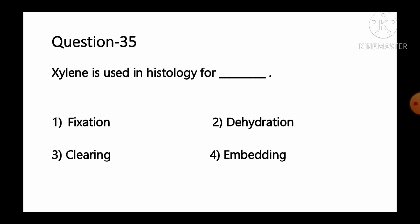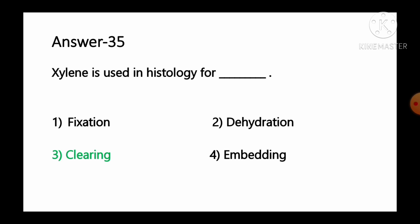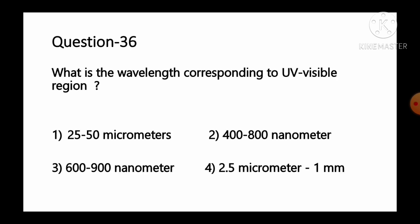Question number 35: Xylene is used in histology for — option 1 fixation, option 2 dehydration, option 3 clearing, option 4 embedding. Xylene is a chemical commonly used in the histology lab as a clearing agent. Clearing agents make the slide easier to read by making the tissue transparent or clear. So option number 3, clearing, is the correct answer.